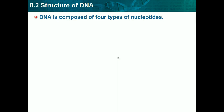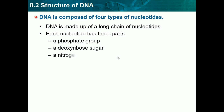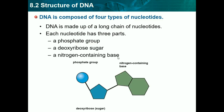DNA is composed of four types of nucleotides. It is made up of long chains of nucleotides, and each nucleotide has three parts: a phosphate group, a deoxyribose sugar, and a nitrogen-containing base. We have to learn all the parts and how to label one. The first sphere is the phosphate group, the pentagon in the middle is always the deoxyribose sugar, and the part containing two pieces is always the nitrogen-containing base.